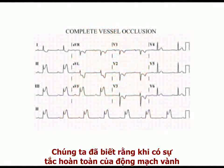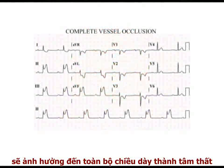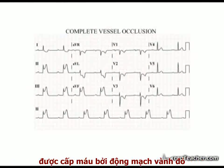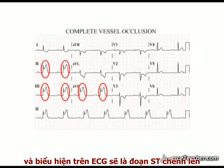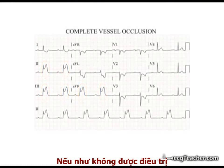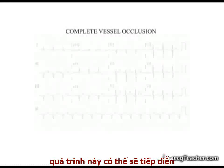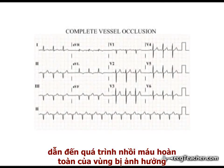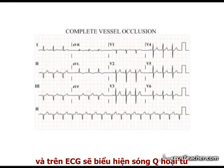Complete occlusion of a coronary arterial vessel renders the entire thickness of the myocardial wall it supplies at risk of infarction, manifesting as ST elevation on the ECG. In the absence of treatment, the process may progress to complete transmural infarction of the area involved with development of pathological Q waves.